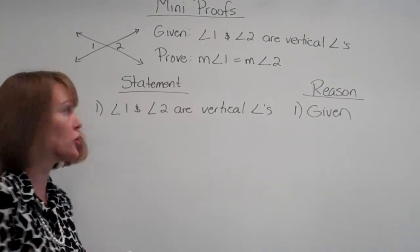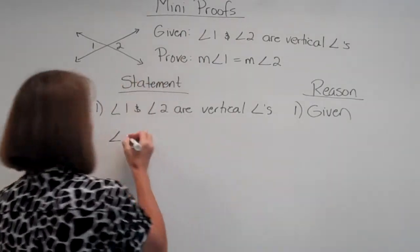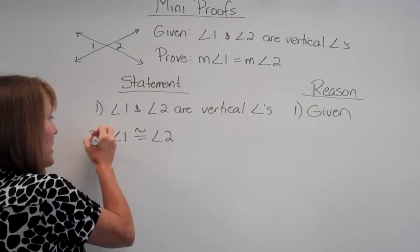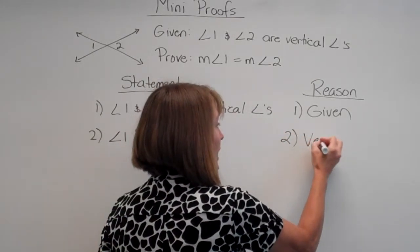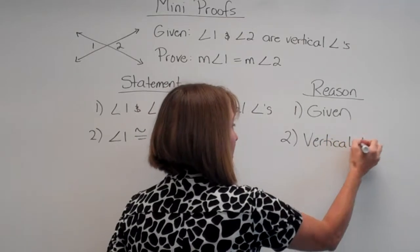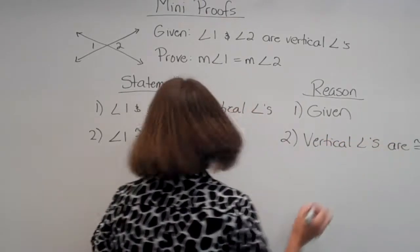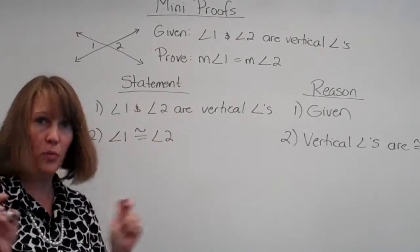But we do know from our theorem that we've already proved, we know that angle 1 is congruent to angle 2. How do we know that? By the theorem we already proved, we know that vertical angles are congruent. Okay, now since we've proved that we can use that. That's our theorem. We're good.